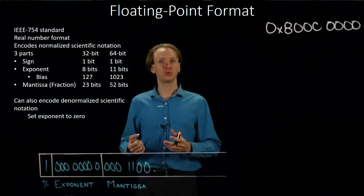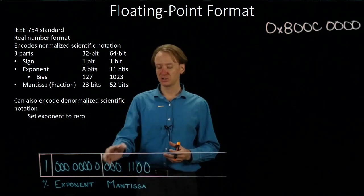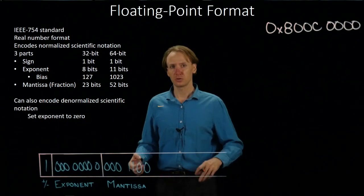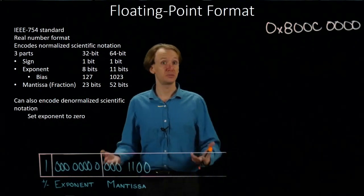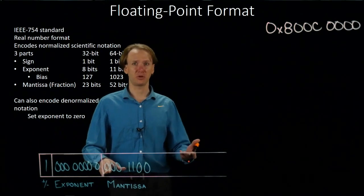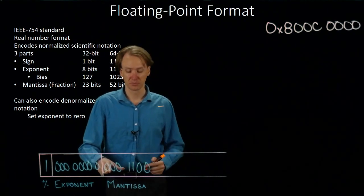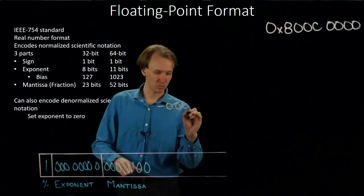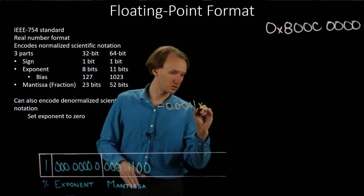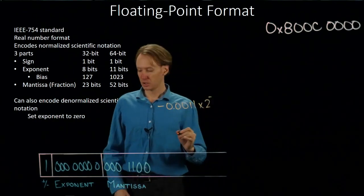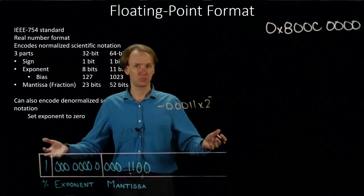One way is to say this is a denormalized number. That means I don't know what that first bit in my number actually is, so I can't just assume it's a 1 the way I did before. I'll have to use this first bit to tell me what the first bit in my number is. So I could write down 0.0011 times 2 negative, then take my exponent, negative 127.